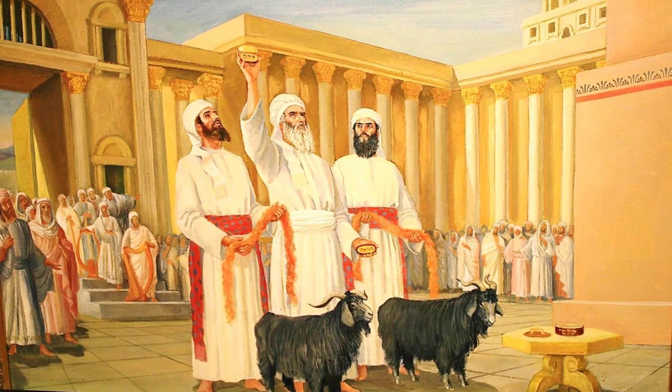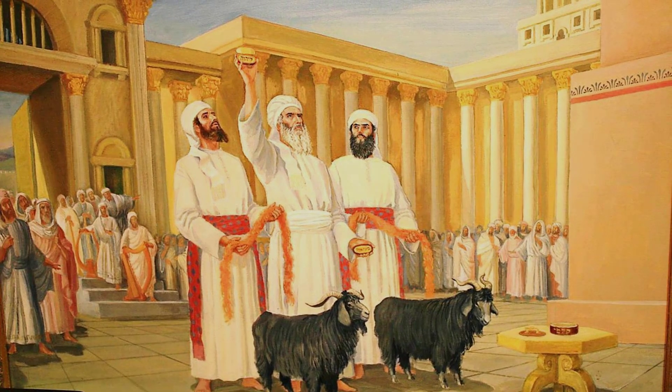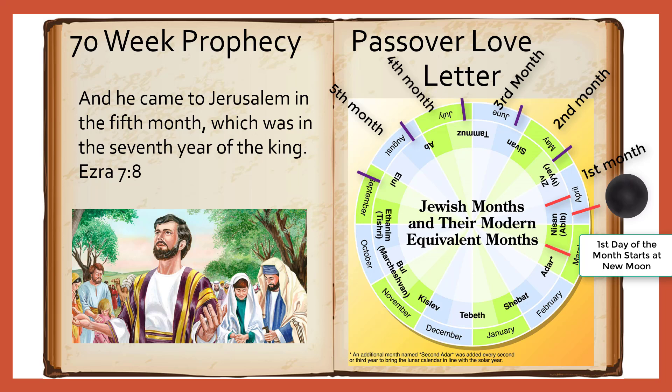Now that we have seen how the Day of Atonement restored the people from their sins, we can find out when it is by looking at our calendar. We figured out from the last video that Ezra arrived at Jerusalem in the fifth month, which was sometime in August to September. The sixth month would be from September to October, and the seventh month would be from October to November. Whenever the new moon began in October would be the first day of the seventh month, and then we go ten days from the new moon to find the tenth day of the seventh month.